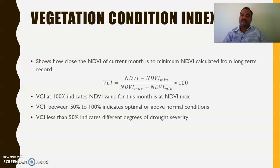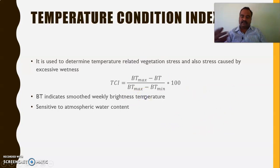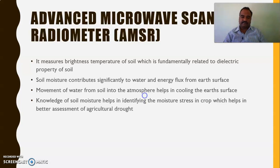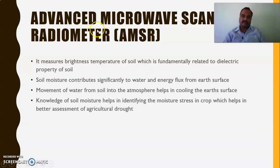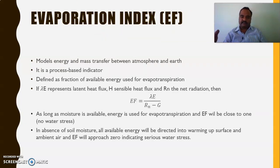The vegetation condition index depends upon the NDVI minimum and maximum values and is also one of the assessment indicators. The advanced microwave scanning radiometer measures the brightness temperature of the soil, which is fundamentally related to the electric property of the soil and how much water is cooling the earth's surface. The evaporation index gives information on how much water is being evaporated.